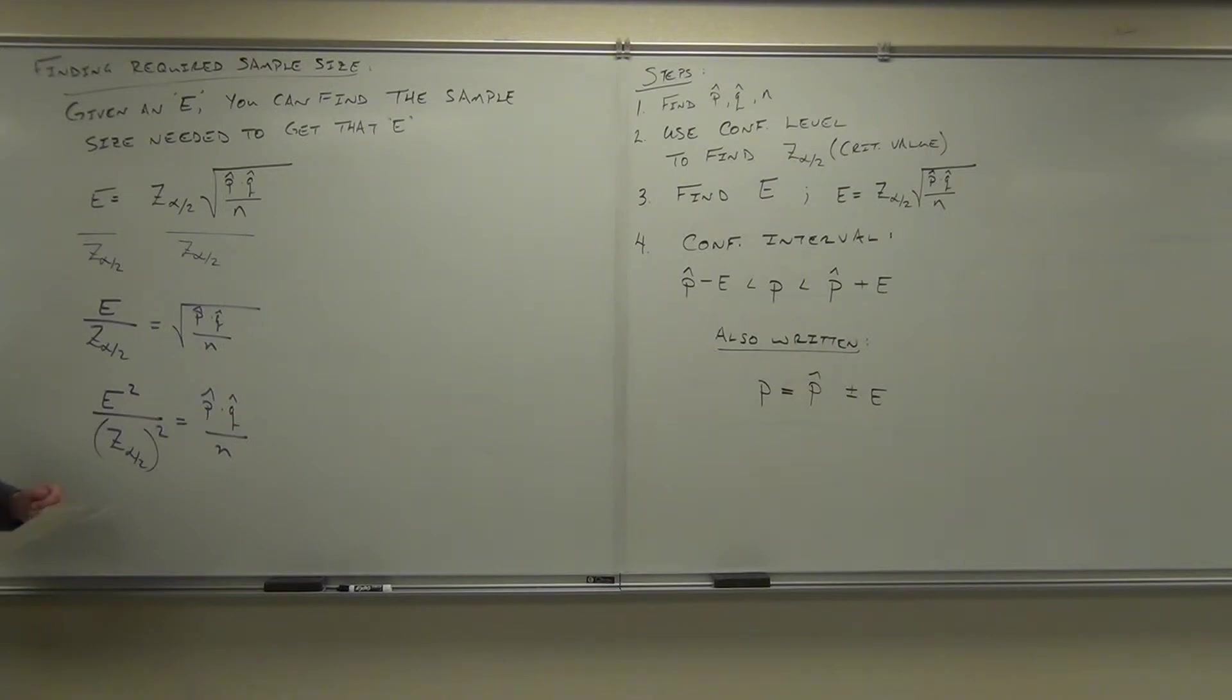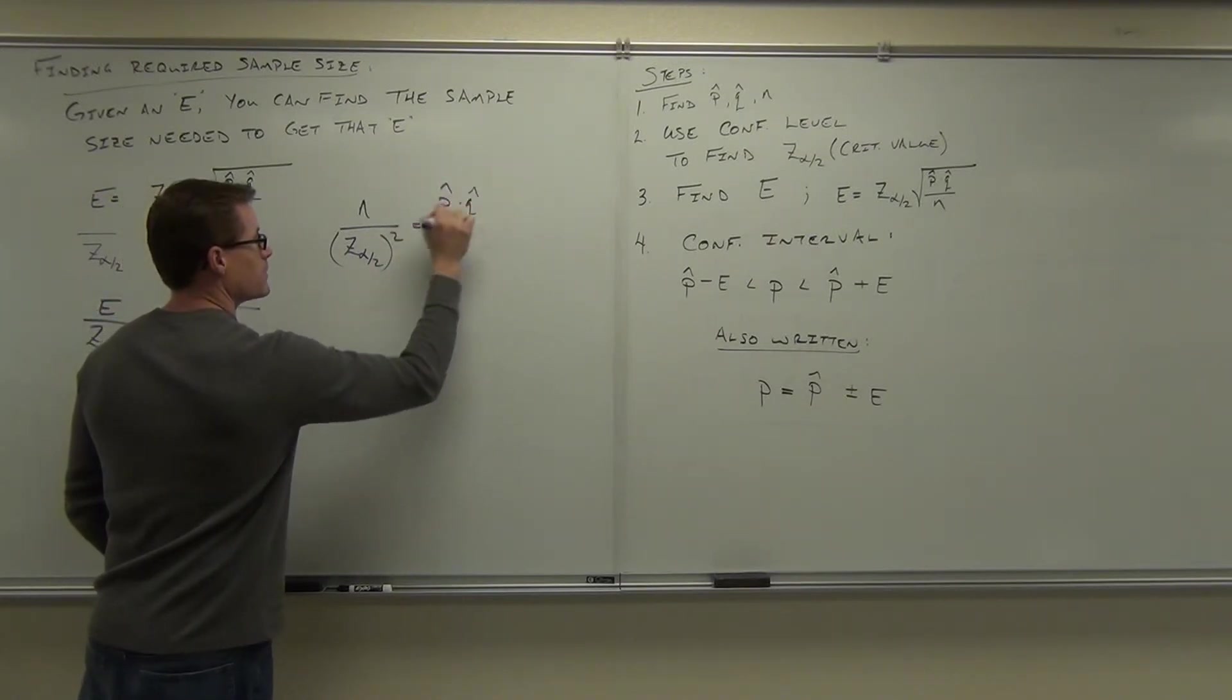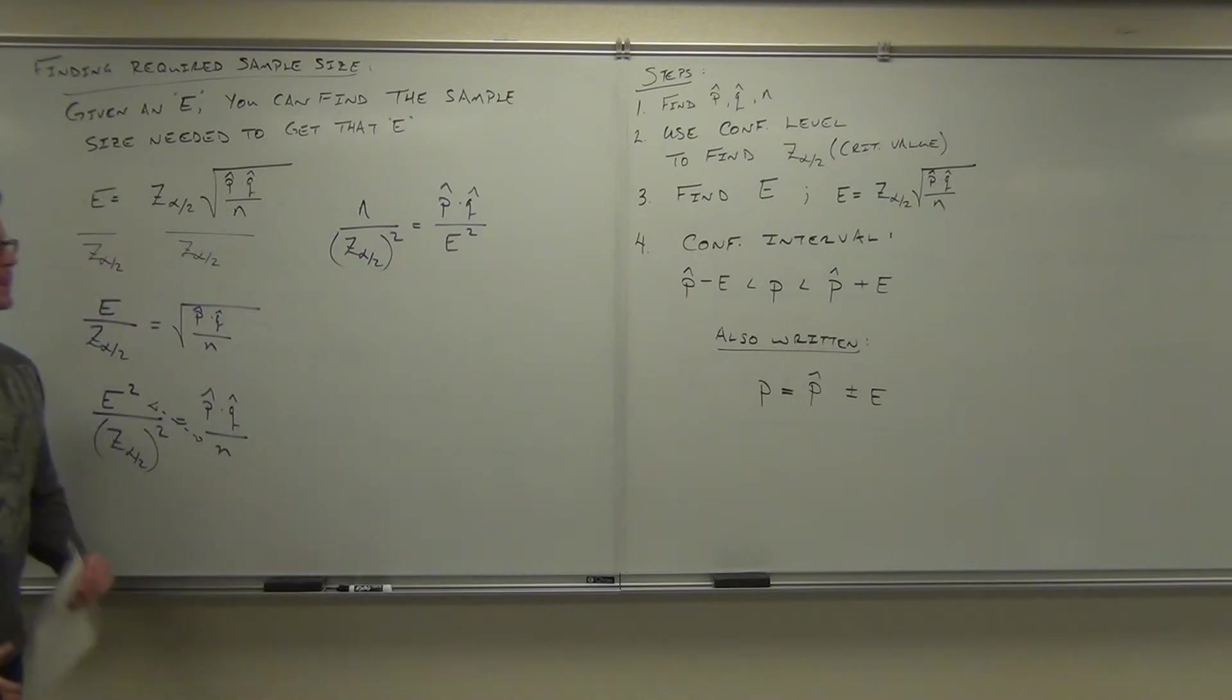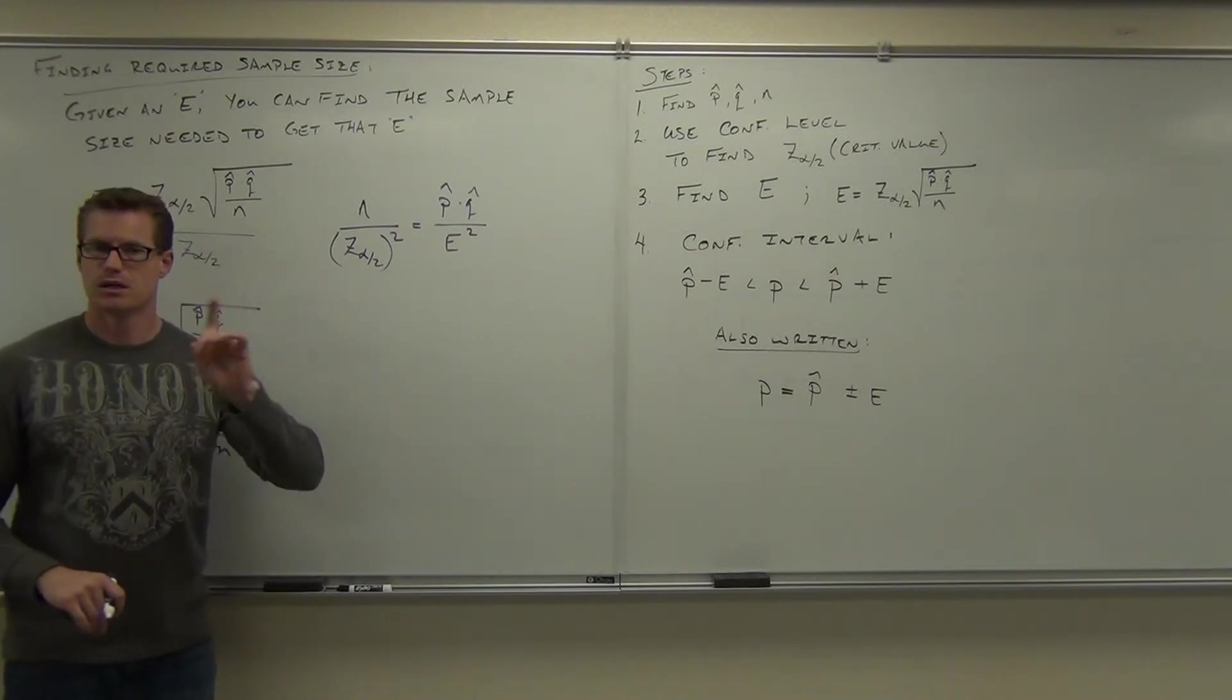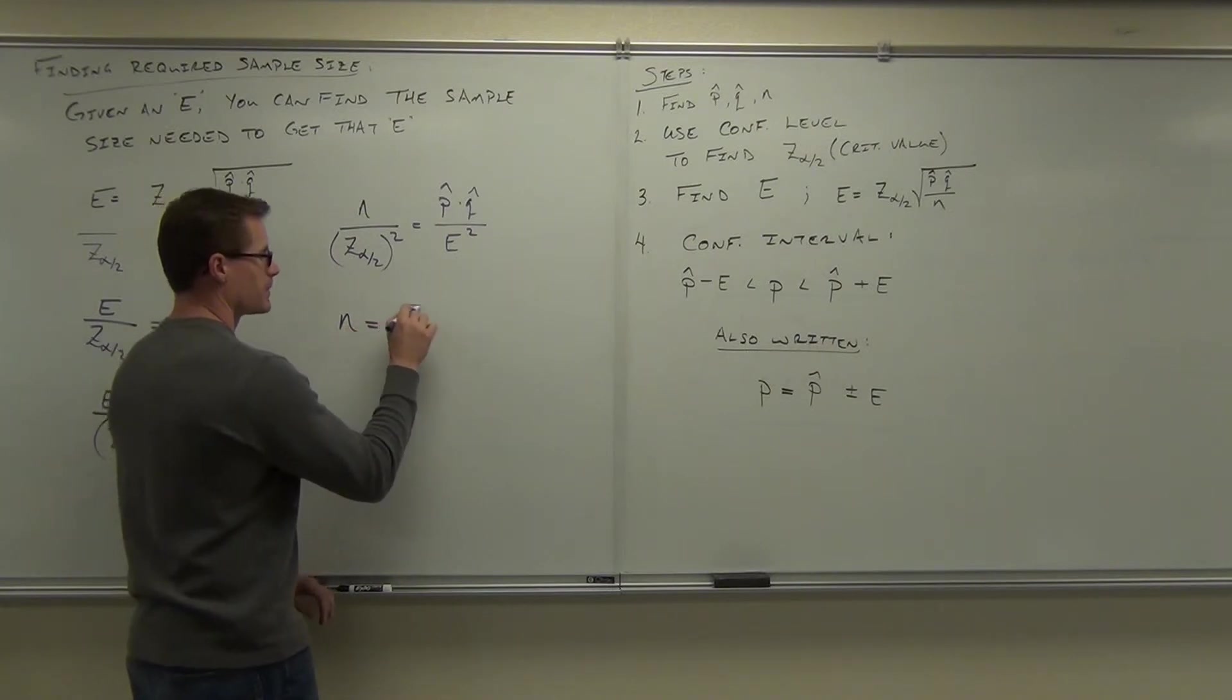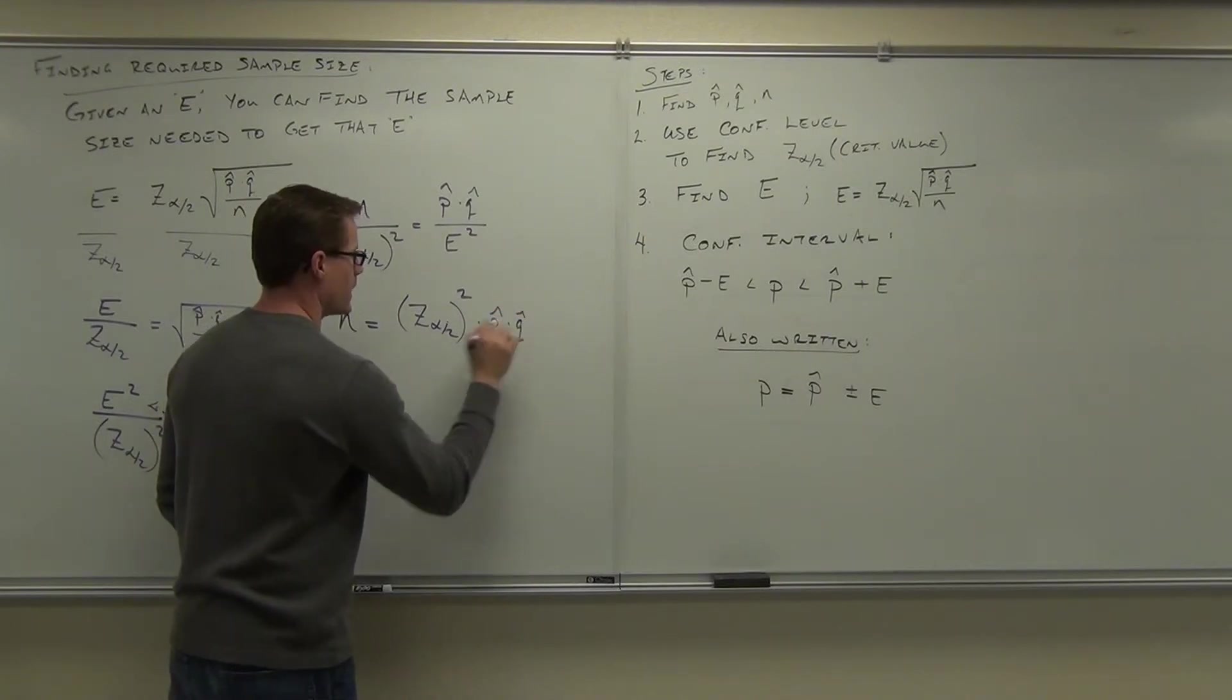What do I want to do now? I'll teach you a little trick. If you want to solve for this thing, you can switch this numerator with this denominator. These things switch. So you would get N over Z alpha over 2 squared equals P hat Q hat over E squared. One more quick step: get rid of the Z alpha over 2 squared. Multiply, and we get N equals Z alpha over 2 squared times P hat times Q hat over E squared.